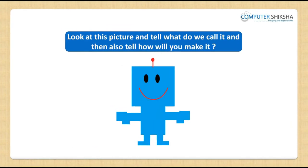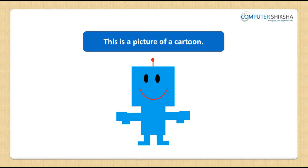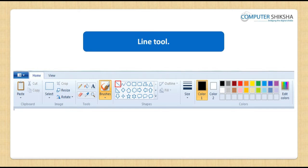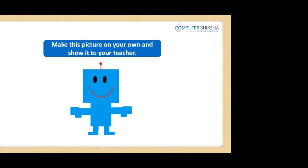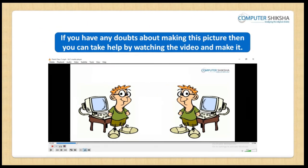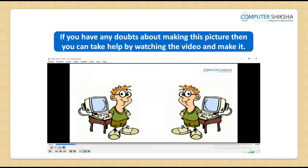Look at this picture and tell what we call it, and also tell how you will make it. This is a picture of a cartoon character. This picture has been made with the help of the rectangle tool, line tool, and the oval tool. Try to make this picture on your own and show it to your teacher. If you have any doubts, watch the video for help.